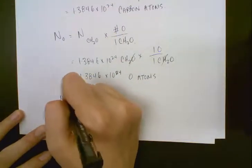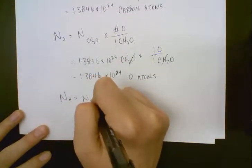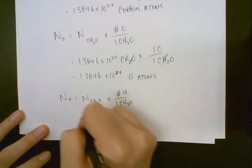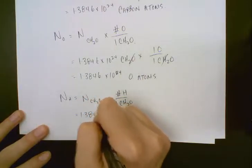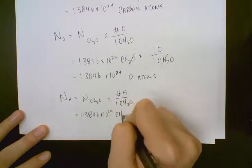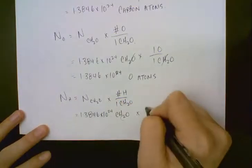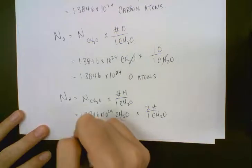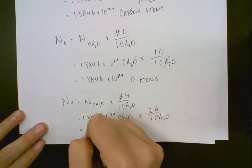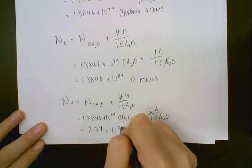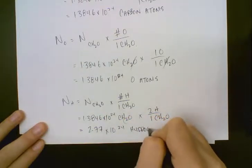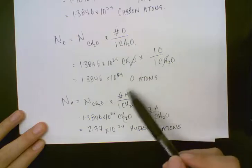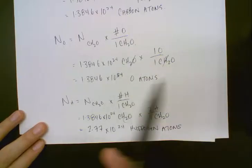For the last one, we're going to use the same formula but this time looking at how many hydrogen we have in any 1 CH₂O. We have 2 hydrogen, so we're going to multiply by 2 hydrogen in every 1 CH₂O. Two over 1 is the same as multiplying by 2, so if you put that in your calculator you'll get 2.77 times 10 to the 24 hydrogen atoms. We can use this conversion formula for moles or for number of particles — big N or little n.